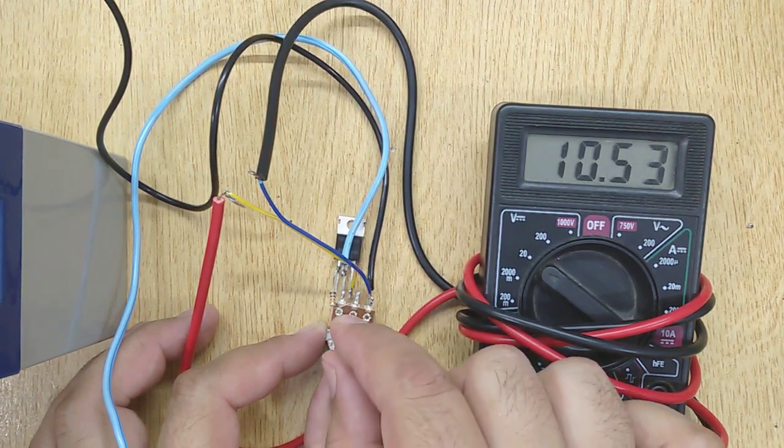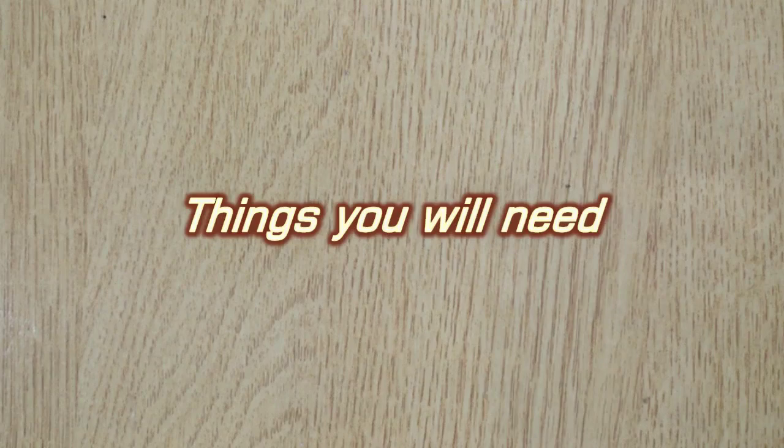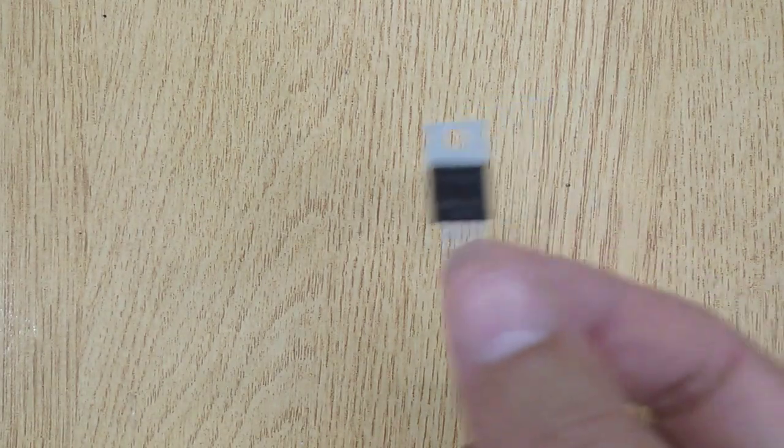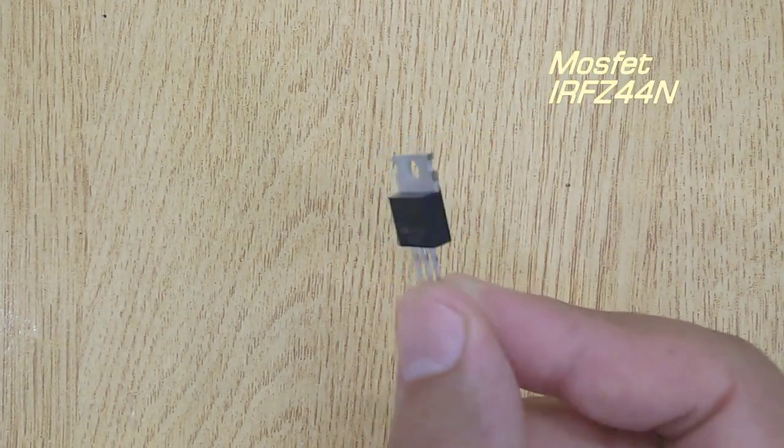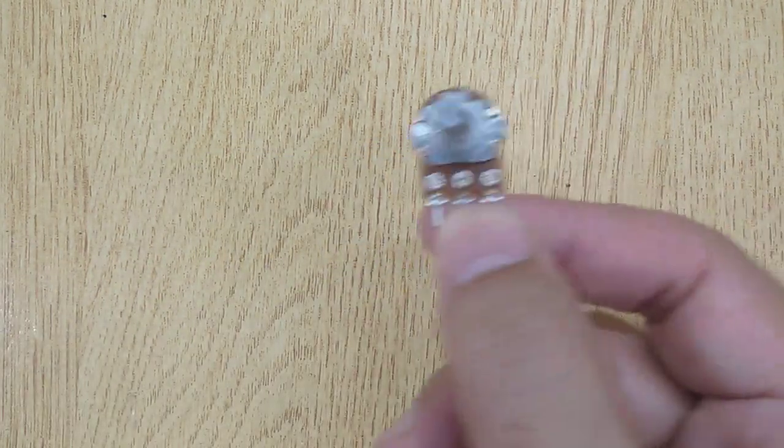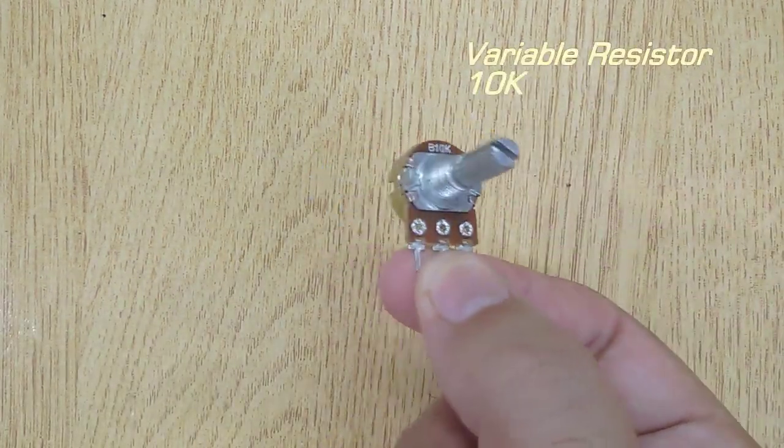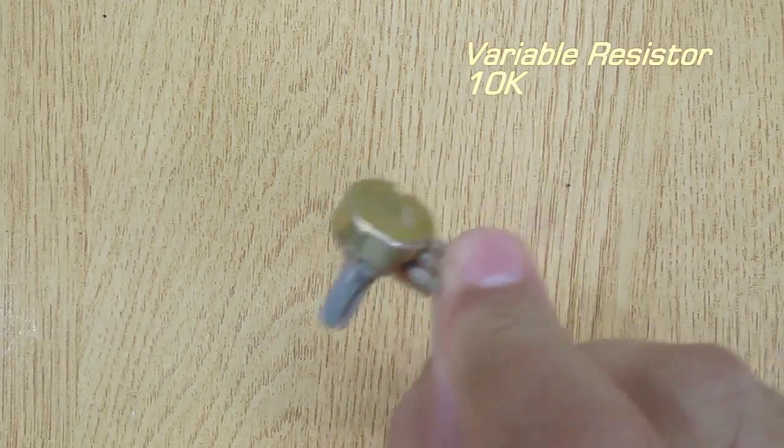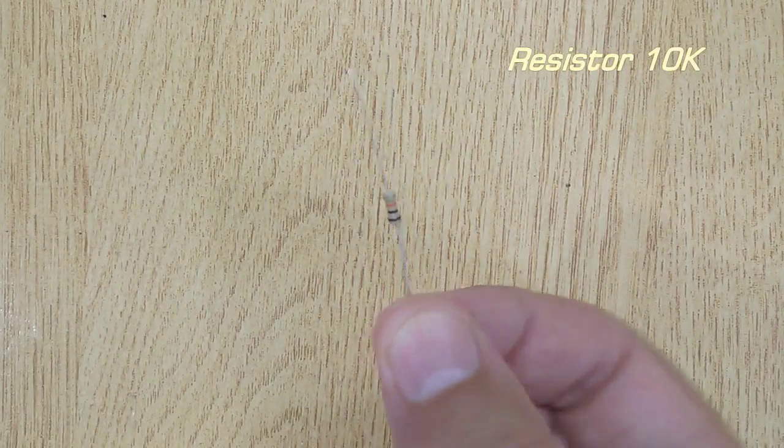To complete this easy electronic project, you will need MOSFET IRF Z-POWER4N, variable resistor 10K, and resistor 10K.